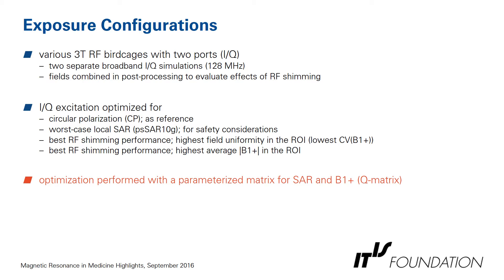The exposure configuration included two separate broadband IQ simulations at 128 MHz, with fields combined in post-processing to evaluate RF shimming effects. These two linear excitations were optimized for circular polarization (CP) as a reference, then for worst-case local SAR for safety, but also for best RF shimming performance in terms of highest B1 field uniformity and highest average B1 in the region of interest. The optimization was performed with a parameterized matrix for SAR and B1+, the so-called Q matrix.